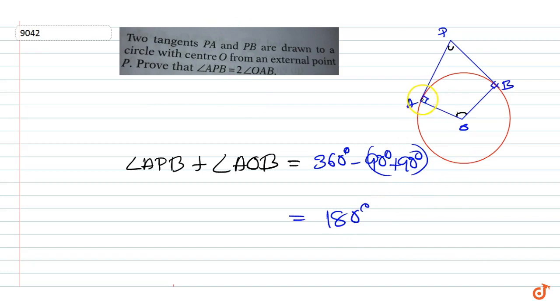Now from this triangle we have, these two angles are equal. So we can write twice angle OAB plus angle AOB equal to 180 degree.